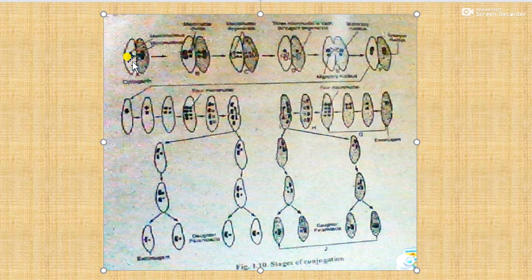The micronucleus of each conjugant divides by meiosis. As a result, four haploid daughter micronuclei are produced in each conjugant. Three of these four micronuclei degenerate, so only one remains.